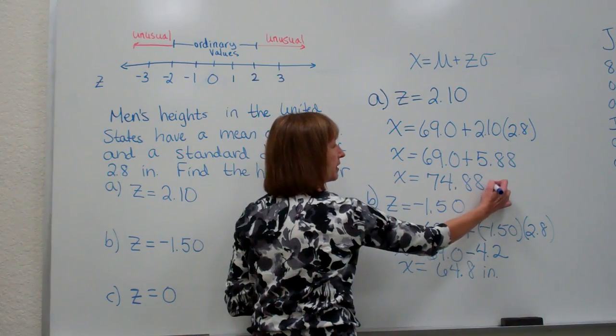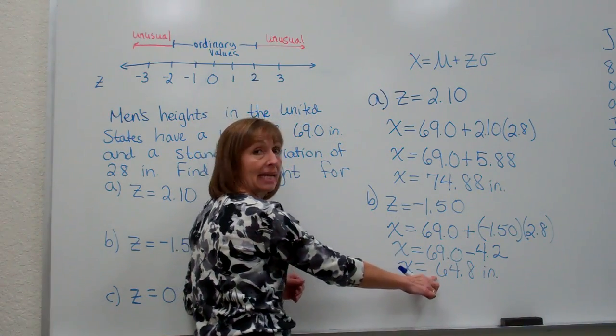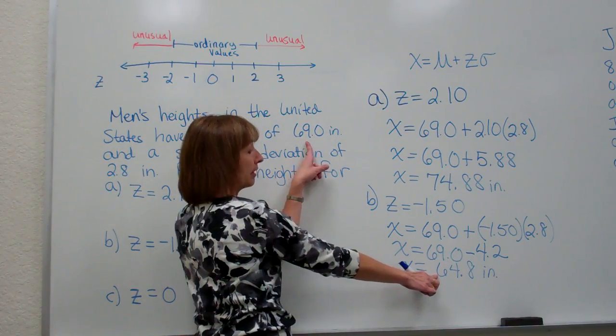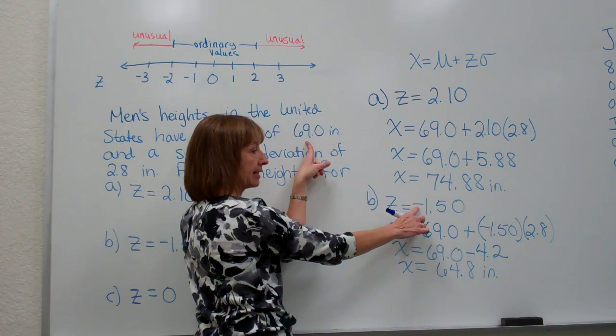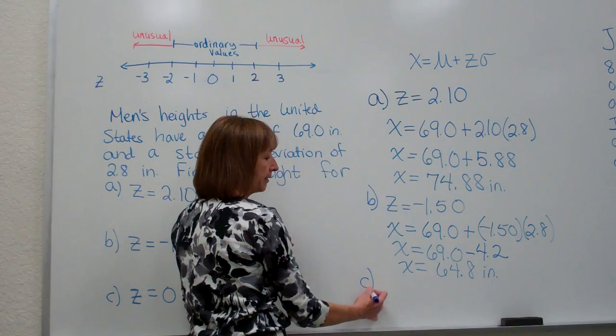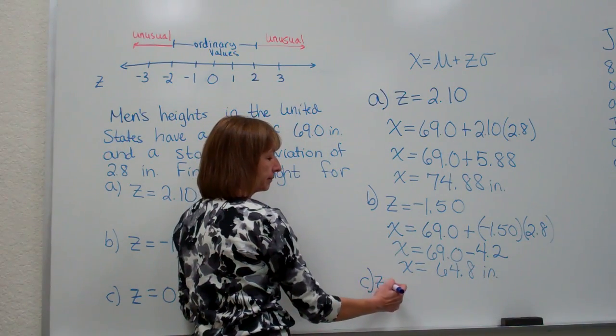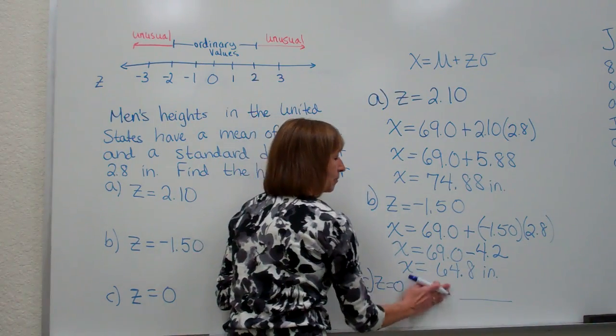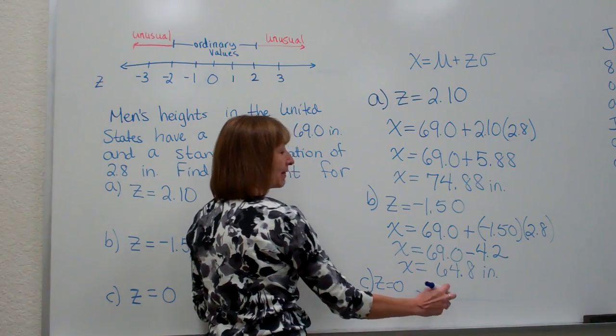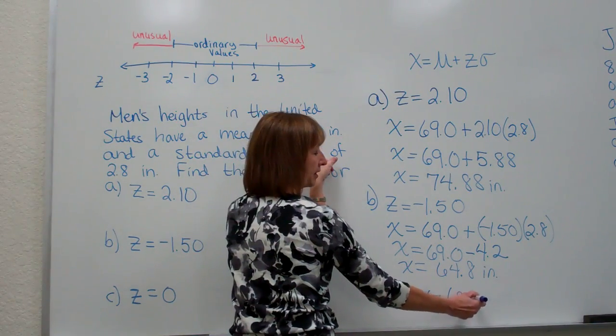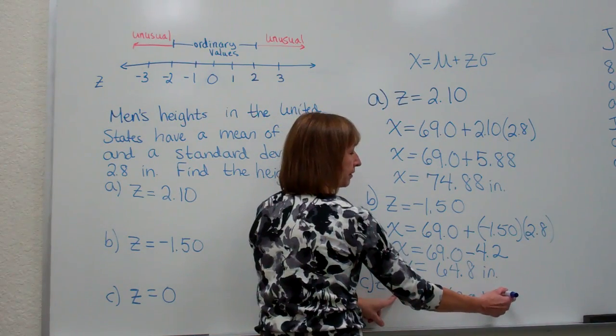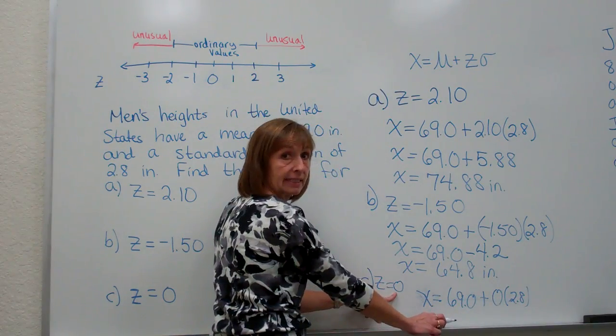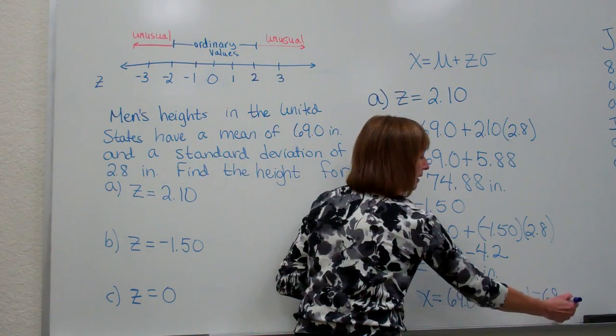And these are inches for these heights. And again as anticipated I got a data value, a raw score, that is smaller than the mean because in this particular example I had a z-score that was negative. Part c for a z-score of 0 my raw score is the mean of my distribution 69.0 plus my z-score of 0 times my standard deviation 2.8. Well 0 times 2.8 is 0 and 69 plus 0 is 69 inches.